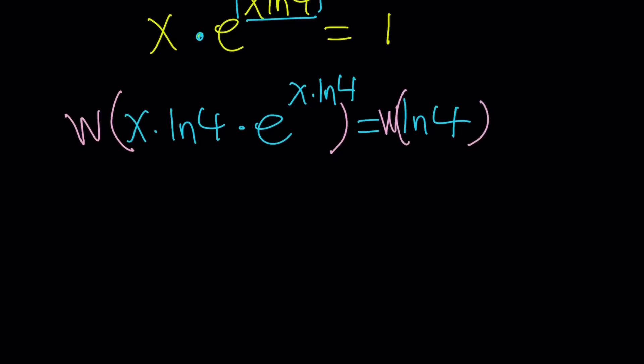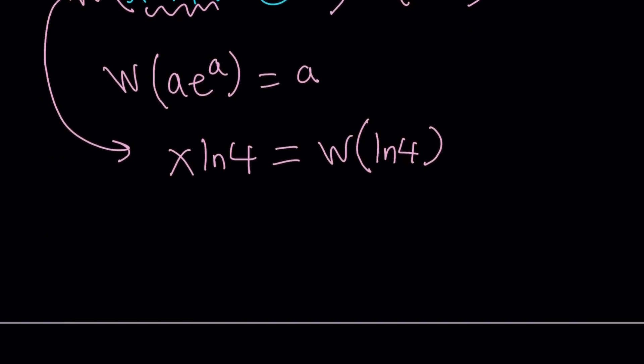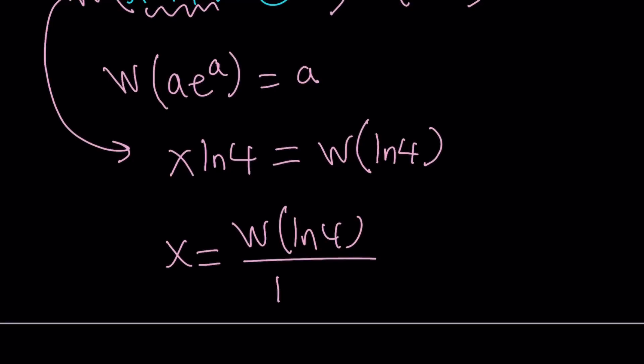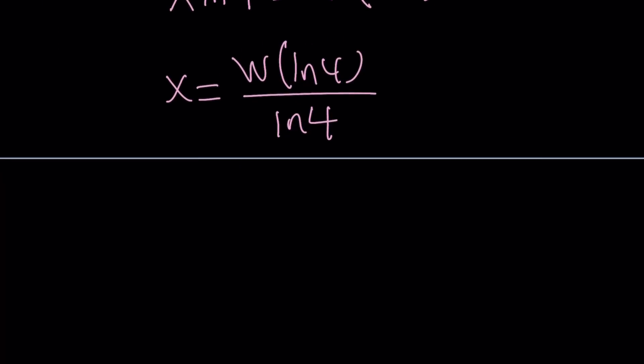But what is Lambert this? Call this A if you want. You have Lambert A e to the A and that is equal to A by definition. So, this is equal to X ln4 and the right-hand side is just W or Lambert ln4. Awesome. We're almost there. X is equal to W ln4 divided by ln4. And you can definitely generalize this for any equation like X A to the X. Anyways, this is the answer.